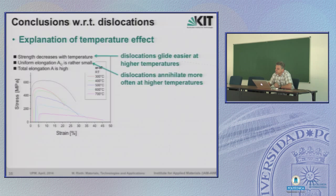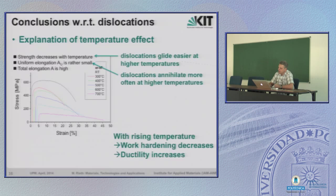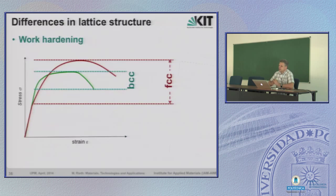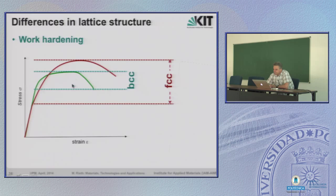As a conclusion, with rising temperature, work hardening decreases and ductility increases. If we compare different metals with different lattices, BCC structured metals show only a small range of work hardening, while FCC face-centered cubic structured metals show an immense high amount of work hardening. Can we explain this? Of course — if you compare FCC with BCC materials and remember that dislocations are bound to specific glide planes, we have to count the possibilities for gliding directions and planes in each structure.